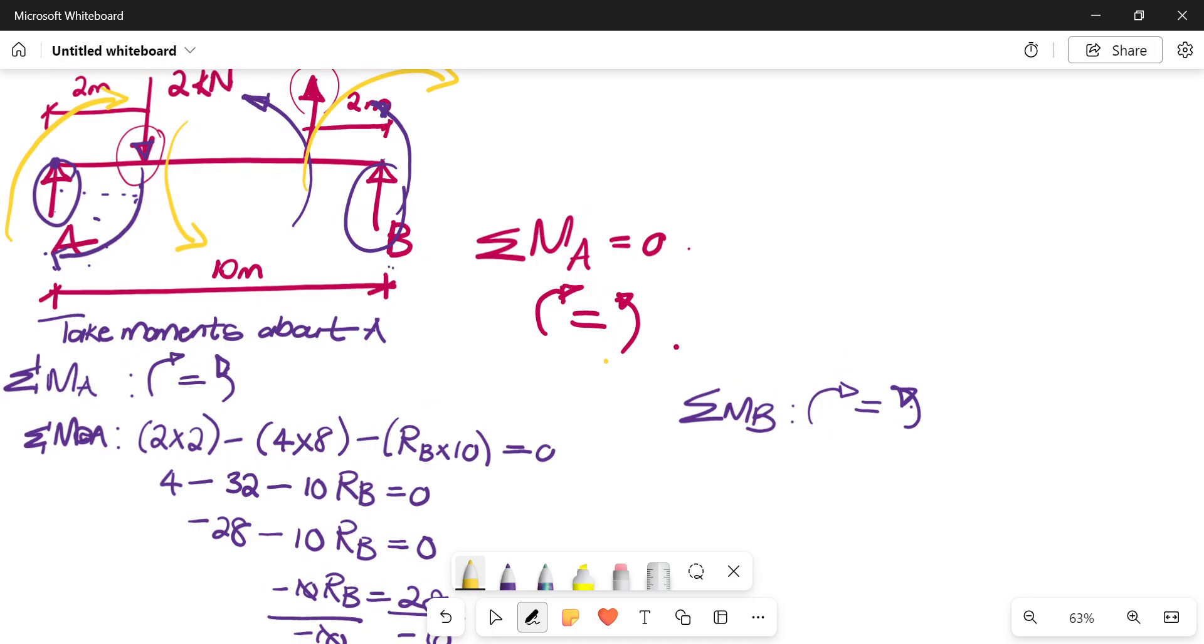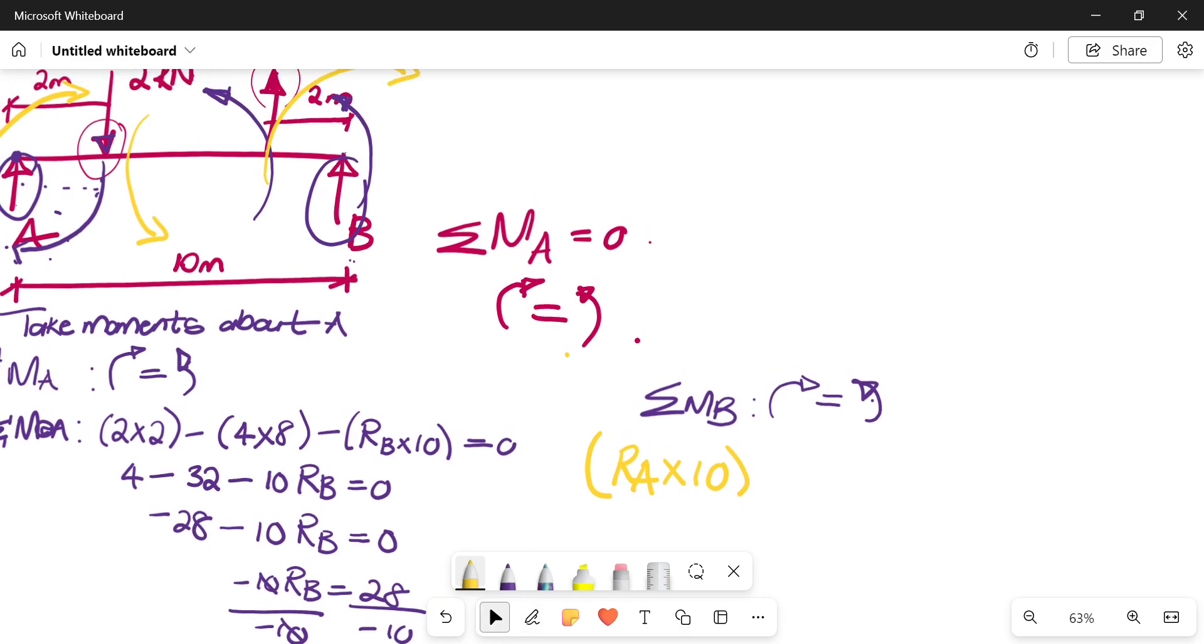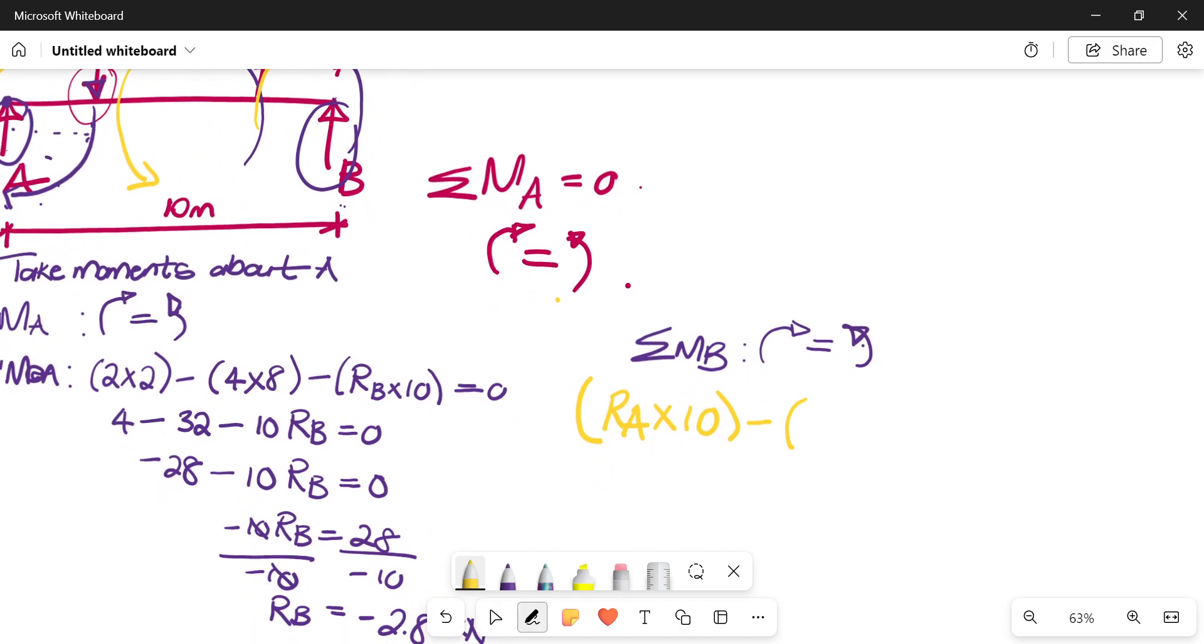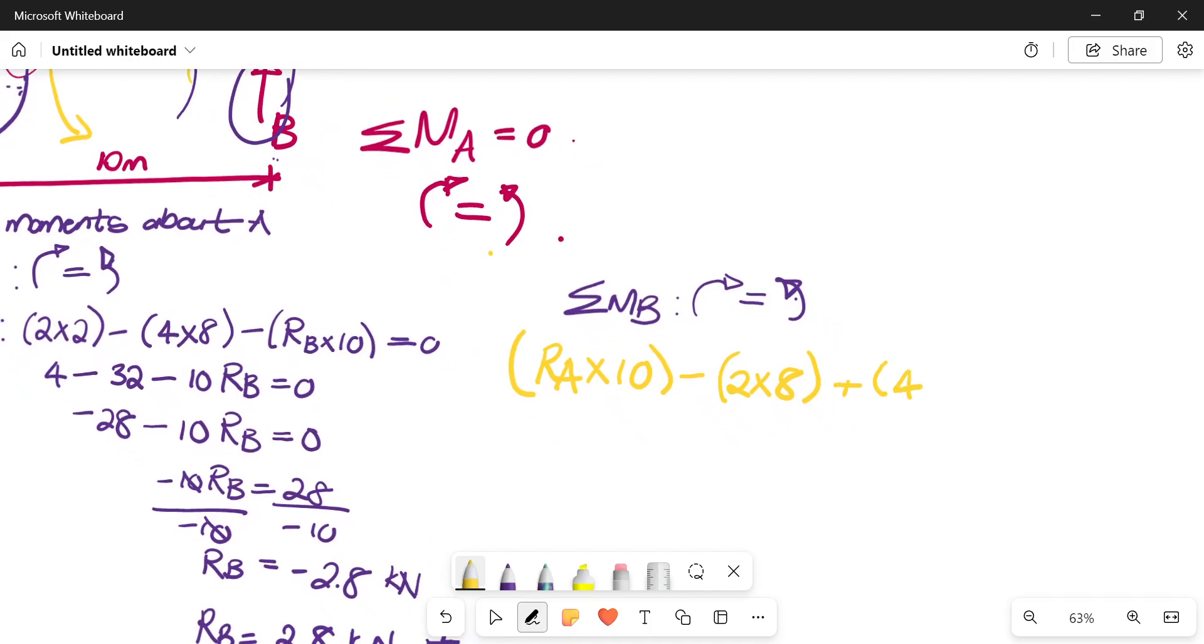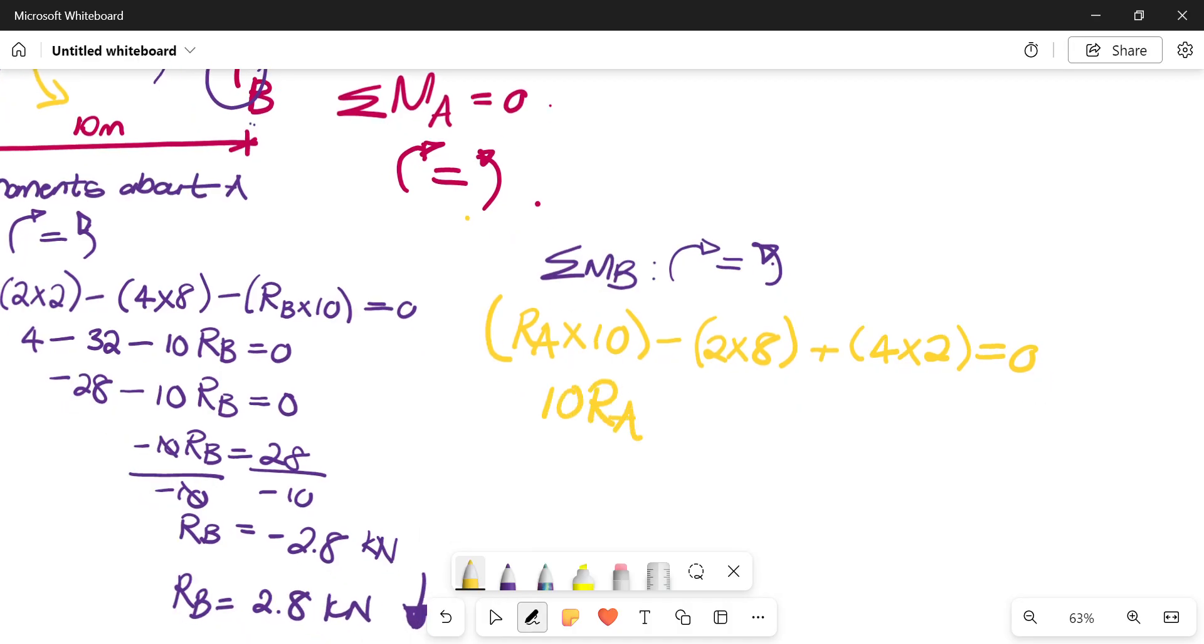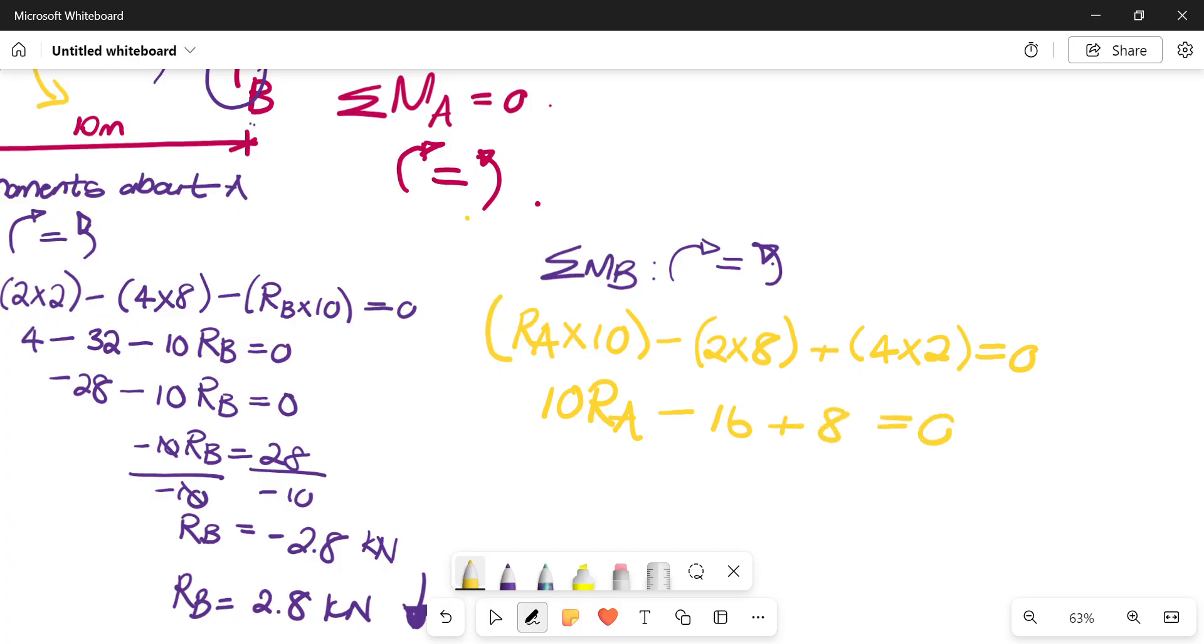So essentially when you're now taking your moments at point B, then you can start off from the very beginning. Say RA times 10. Okay, that is clockwise. Your 2 kilonewtons is anticlockwise, so you can put negative. 2 kilonewtons times 8. Your 4 kilonewtons is clockwise. So you can say plus 4 times 2 is equals to 0. So 10 RA minus 16 plus 8 is equals to 0. 10 RA minus 8 is equals to 0. So 10 RA is equals to 8. Divide by 10.